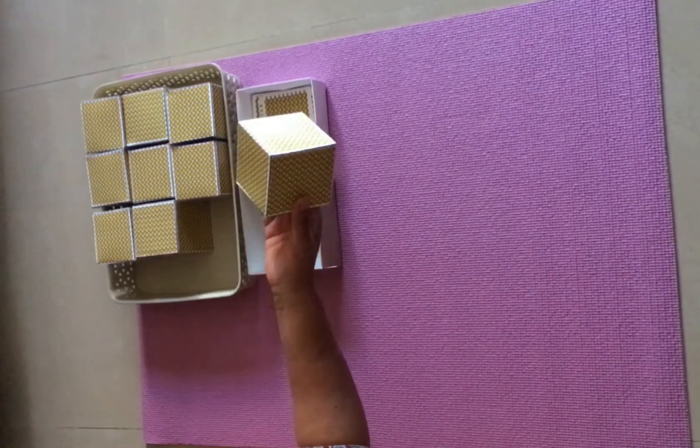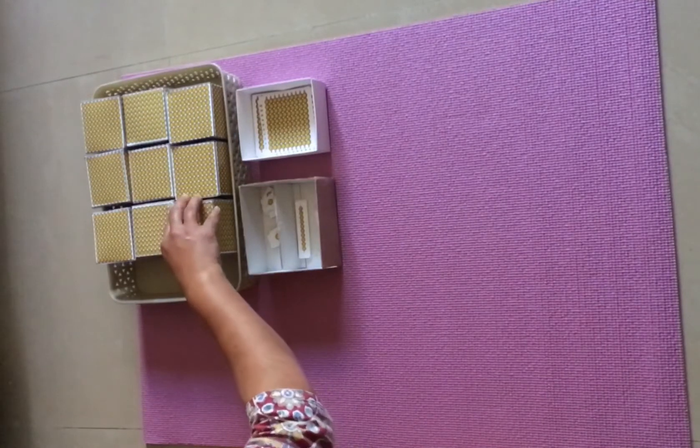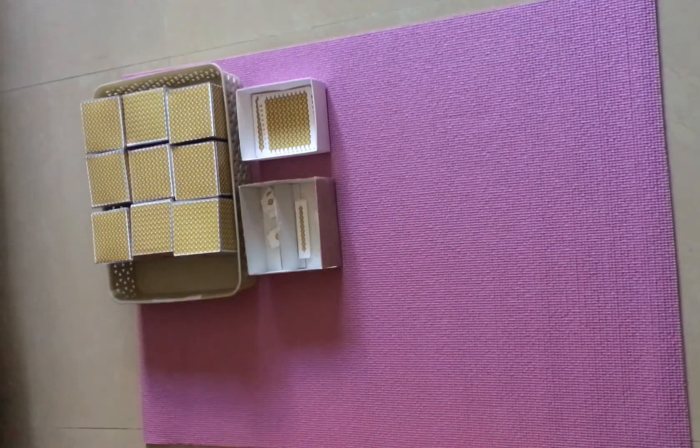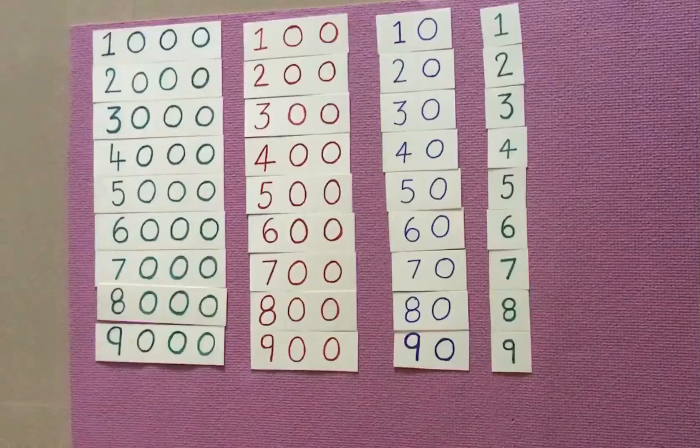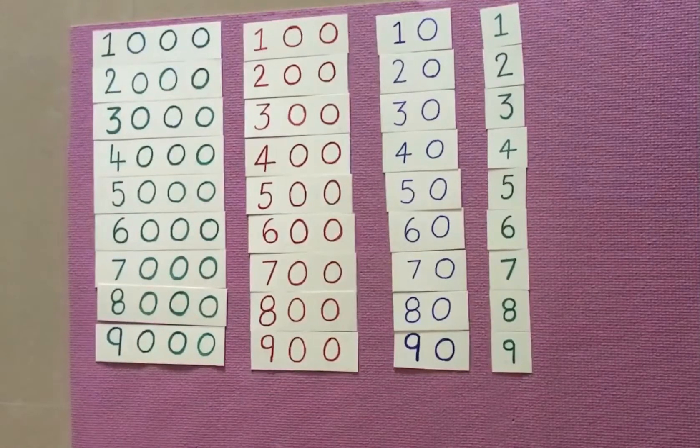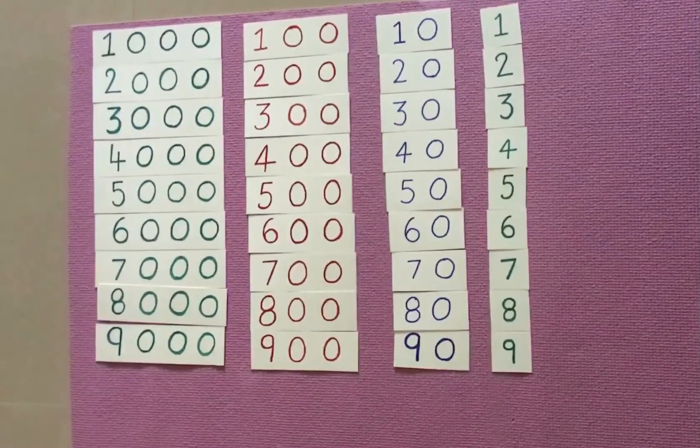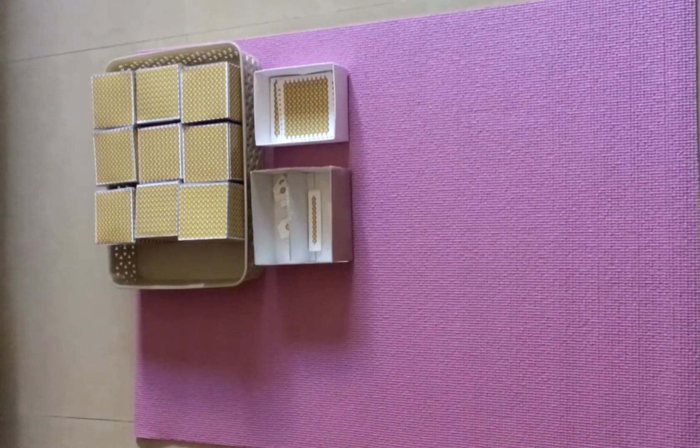This activity helps the child experience the mechanism of changing the hierarchies. Along with this, we need one set of cards which resembles the decimal system static part card material. Additionally, we have cards from 1000 which go up to 9000.